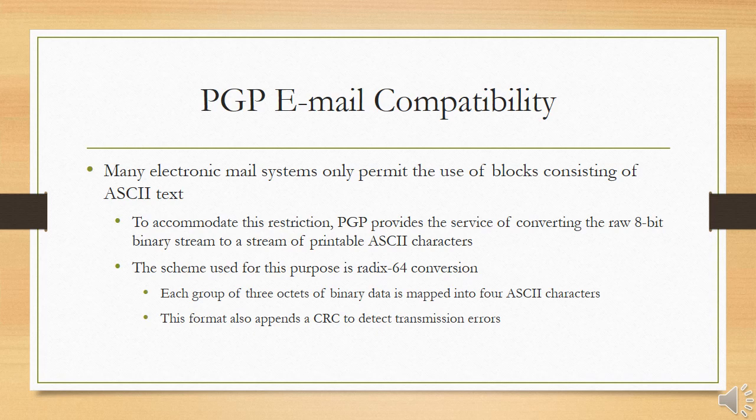PGP email compatibility: when PGP is used, at least part of the block to be transmitted is encrypted. If only the signature service is used, the message digest is encrypted with the sender's private key. If the confidentiality service is used, the message plus signature (if present) are encrypted with a one-time symmetric key. Thus part or all of the resulting block consists of a stream of arbitrary 8-bit octets. However, many email systems only permit the use of blocks consisting of ASCII text. To accommodate this restriction, PGP provides a service of converting the raw 8-bit binary stream to a stream of printable ASCII characters using Radix-64 conversion, where each group of three octets of binary data is mapped into four ASCII characters.